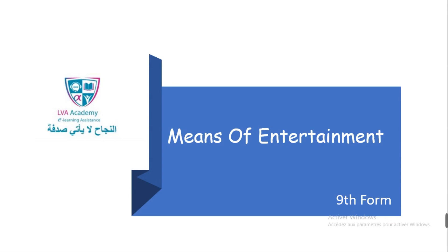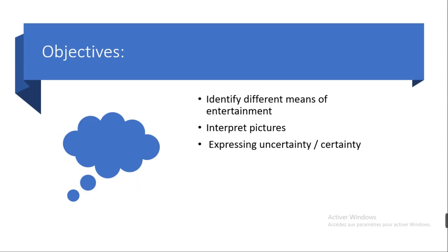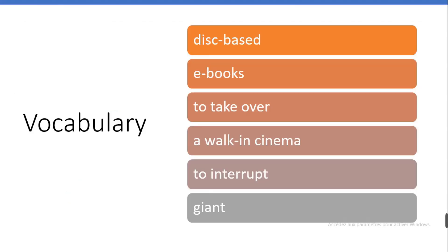In this lesson you should be able to: first, identify different means of entertainment; second, interpret pictures; third, express uncertainty and express certainty. Here is a list of vocabulary you should be able to learn.